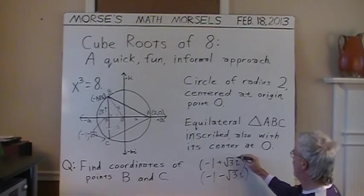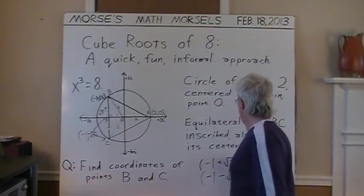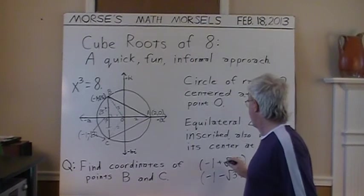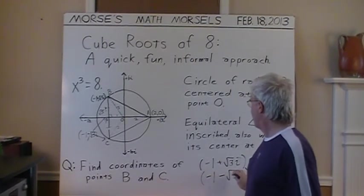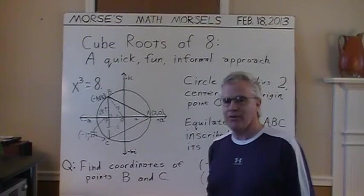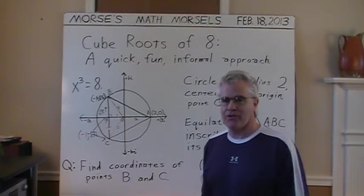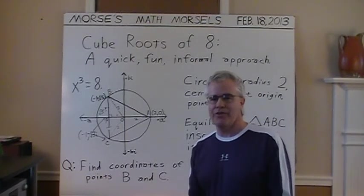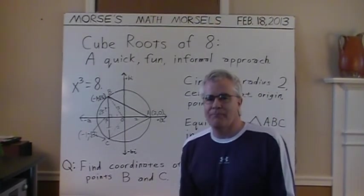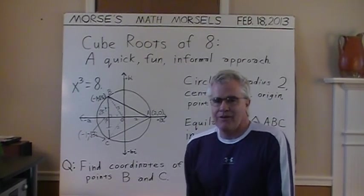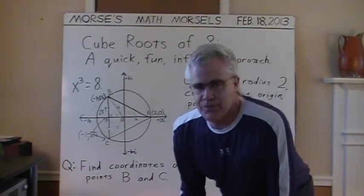Notice that the i is outside the radical. We're taking just the square root of three and multiplying it by i, and that's being added on to the minus one. So, that completes my little informal demonstration. I made a number of assumptions, and you are free to prove them mathematically on your own. And thanks for viewing.